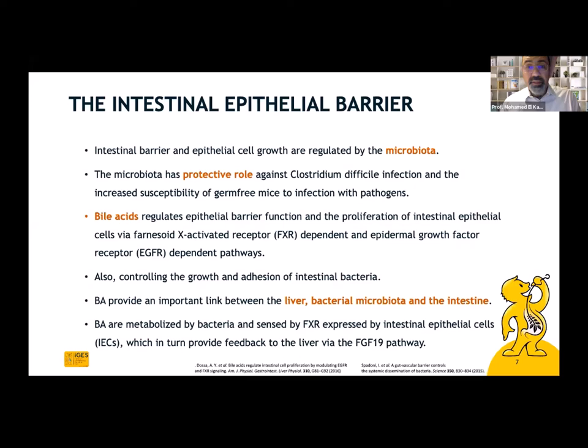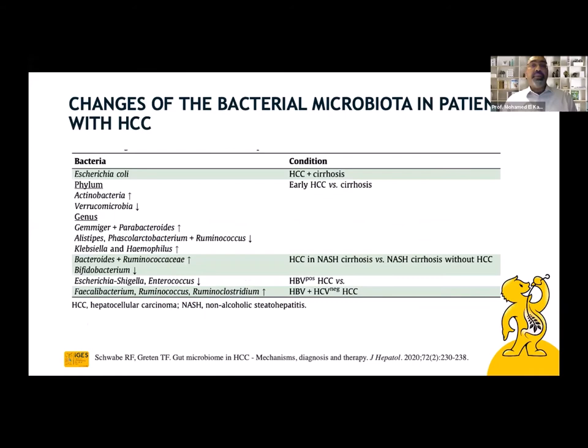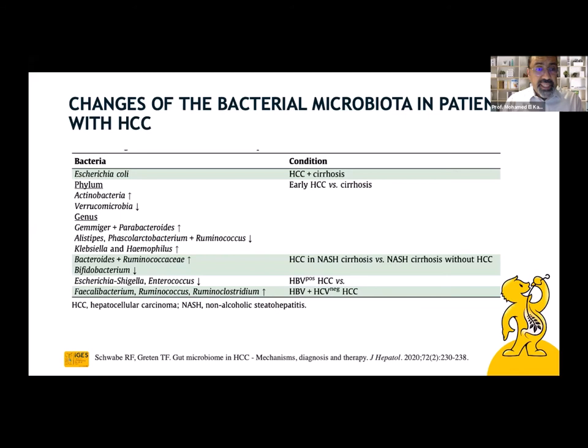Many studies have discussed changes in bacterial microbiota in patients with hepatocellular carcinoma with different backgrounds — patients with cirrhosis, early HCC versus cirrhosis, NASH, viral hepatitis B and C, or combined infection. These changes included a large number of organisms functioning as microbiota, such as Escherichia coli, Klebsiella, Bacteroides, Bifidobacterium, and others.